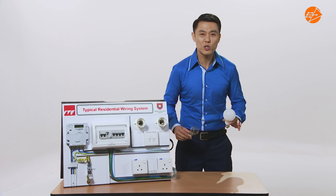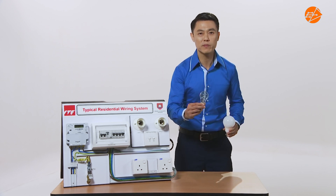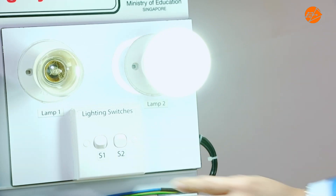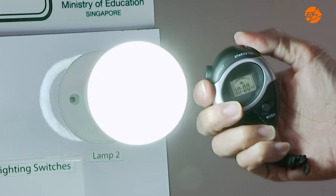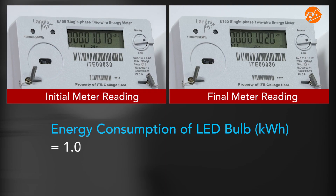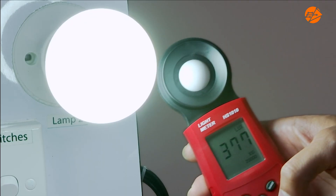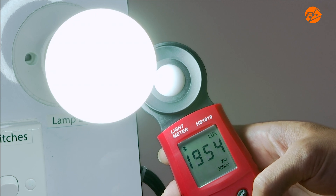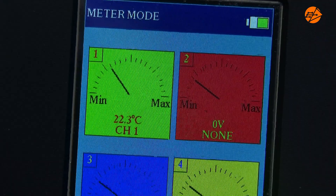In this segment, we are going to compare some properties of an LED bulb and a filament bulb. Let's calculate the energy consumption of an LED bulb over a period of 10 minutes. After 10 minutes, the energy consumption of the LED bulb is 0.002 kilowatt hour. The LED bulb has a maximum intensity of about 19,540 lux. The temperature of the LED bulb is 22.3 degrees Celsius.